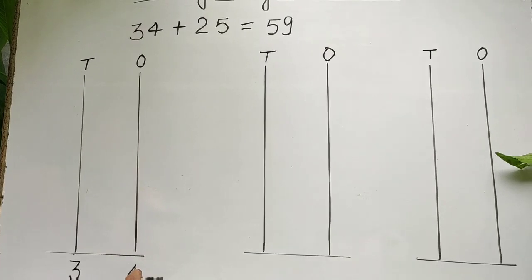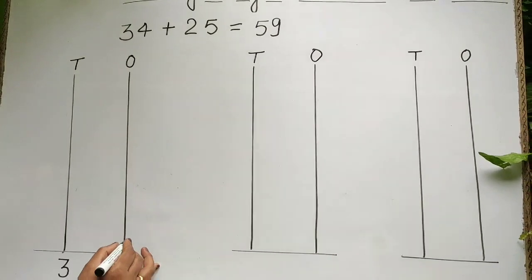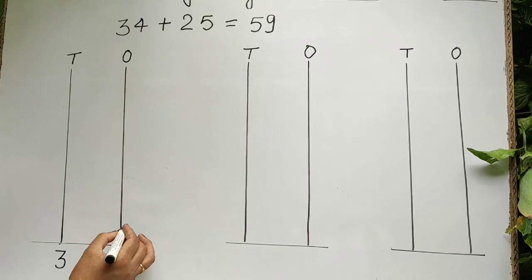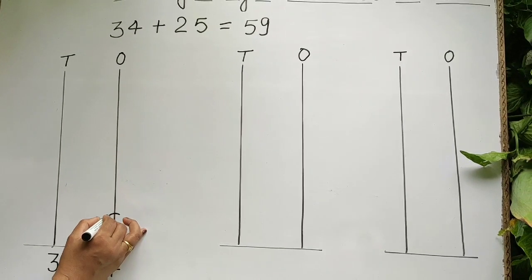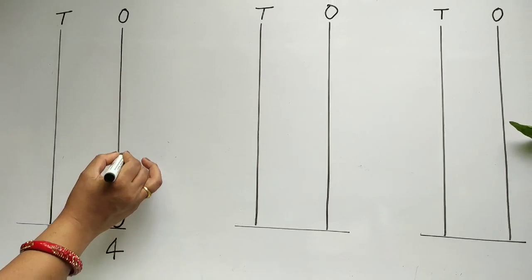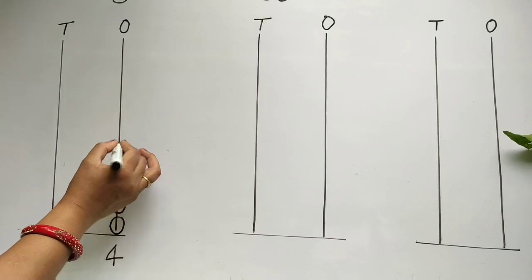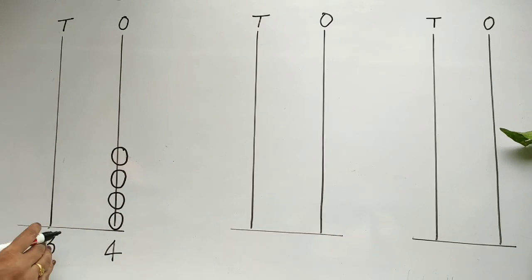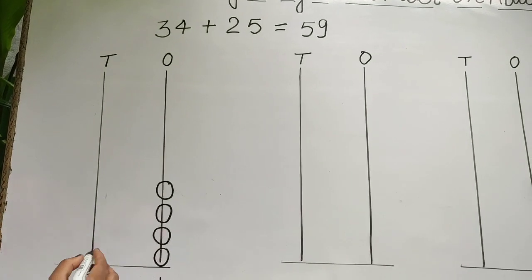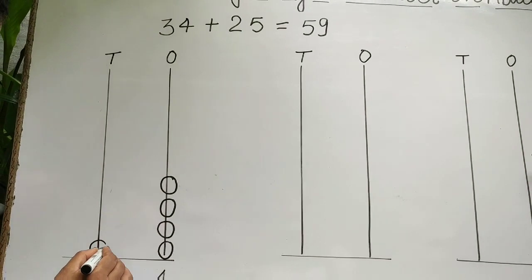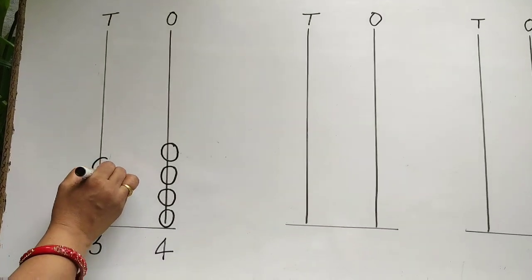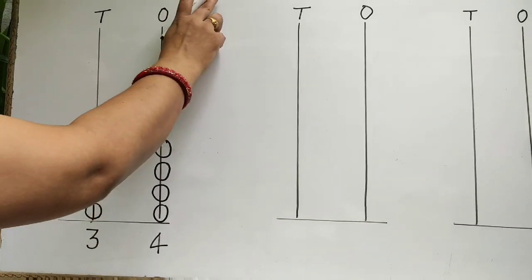Now we will draw 4 beads on the ones rod. Let's count and draw: one, two, three, four. And draw 3 beads on the tens rod: one, two, three.